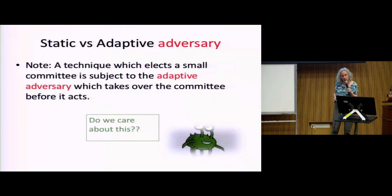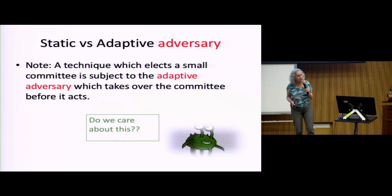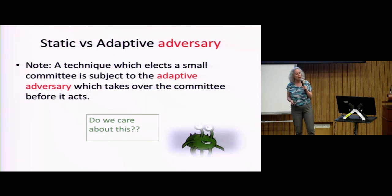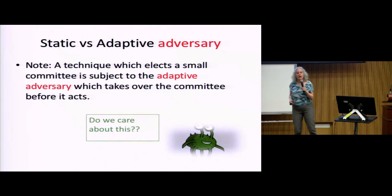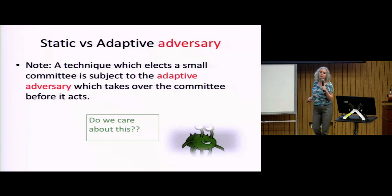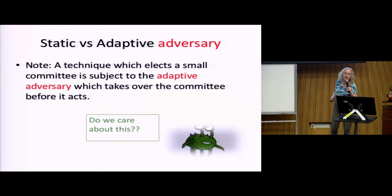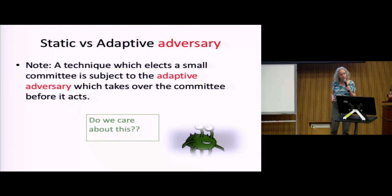This election approach is no good with an adaptive adversary, because the adaptive adversary will take over the elected committee. However, with private channels and an adaptive adversary, we actually have a working protocol — since it's Byzantine agreement in the clear, I won't go into it, but if you have privacy you can do something like this.